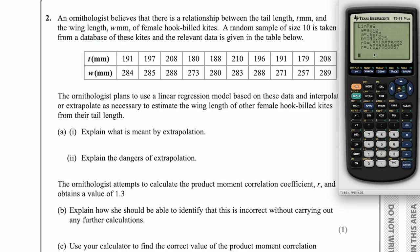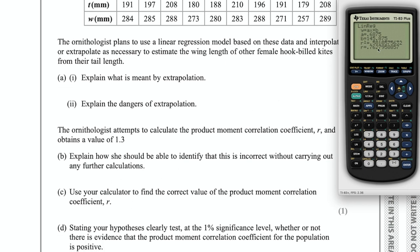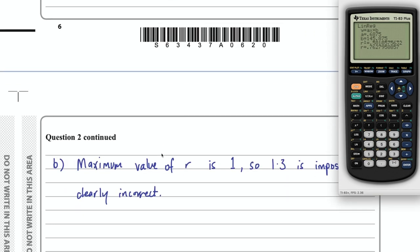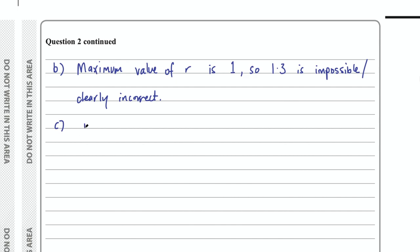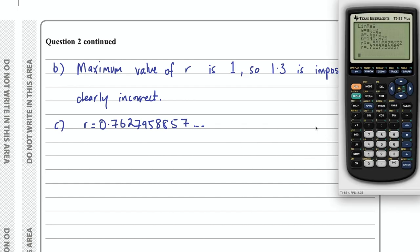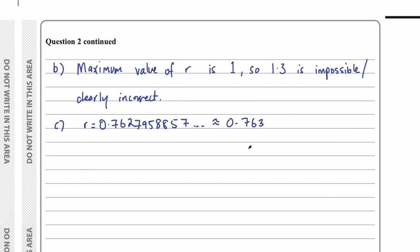I get a value of 0.7627958857. The question didn't say how much to round off, so I'd write quite a few decimal places then round. I would probably round this to 0.763. That's part C.